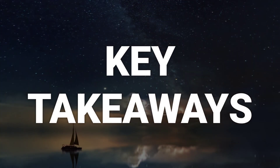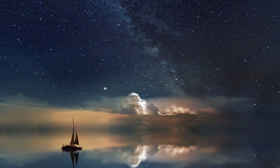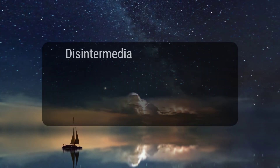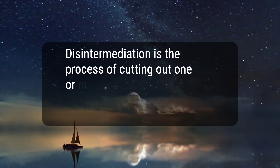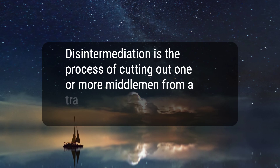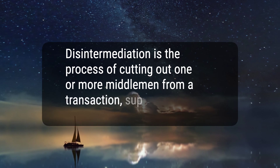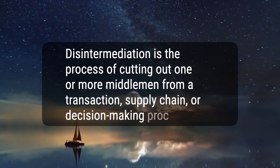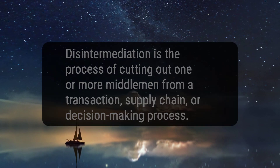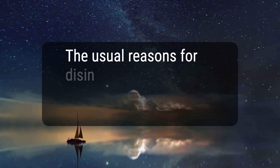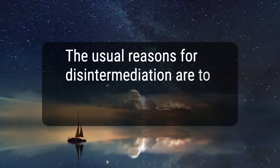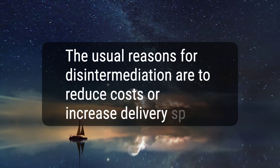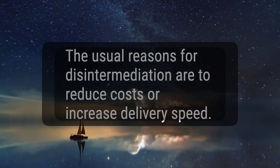Here are five key takeaways. One: disintermediation is the process of cutting out one or more middlemen from a transaction, supply chain, or decision-making process. Two: the usual reasons for disintermediation are to reduce costs or increase delivery speed.